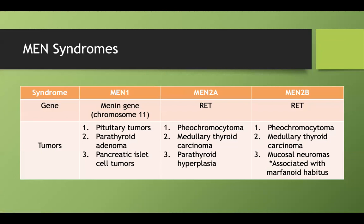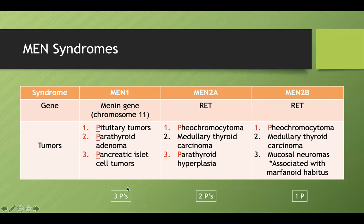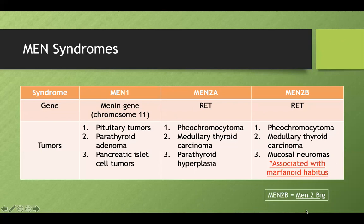Here's a chart to make it easier to learn later. MEN1 uses the menin gene on chromosome 11 — a lot of ones. The MEN2 syndromes share two tumors in common. The 3-2-1 rule: MEN1 has three P's, MEN2A has two P's, and MEN2B has only one P. And the marfanoid habitus marks MEN2B, or MEN2-BIG syndrome.